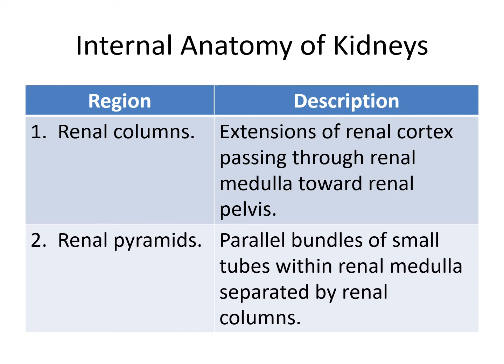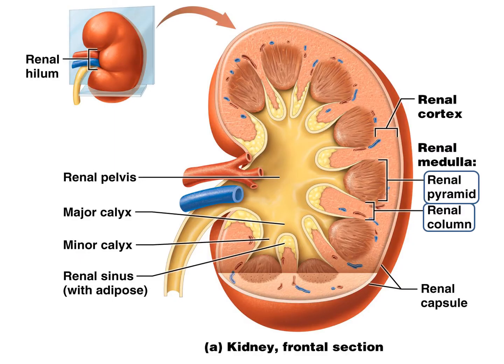In addition, the internal anatomy of the kidney also has renal columns and renal pyramids. The renal columns are extensions of the renal cortex that pass through the renal medulla toward the renal pelvis, while the pyramids are parallel bundles of small tubes within the renal medulla separated by the renal columns. Here we see the renal columns extending from the cortex into the medulla, and the renal pyramids as these triangular-shaped regions of the medulla.